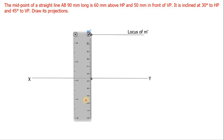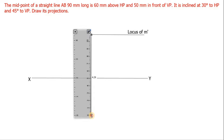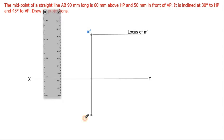The midpoint of the straight line is 50 mm in front of VP, so extend this vertical line 50 mm below XY. This point will be called M. As we drew the locus of M dash, draw a horizontal line crossing M — this is called the locus of M.